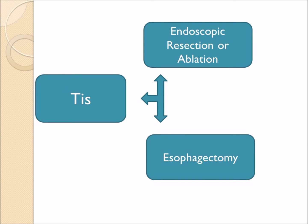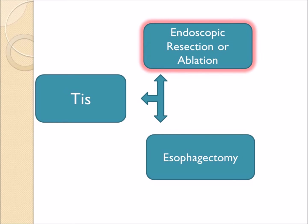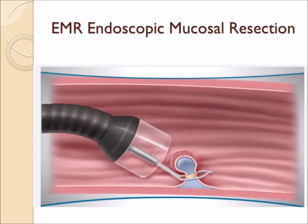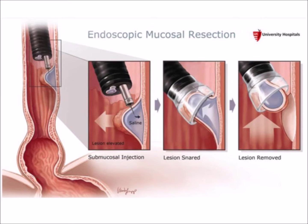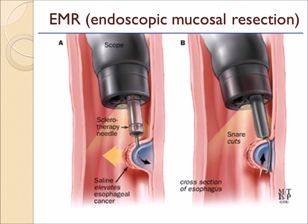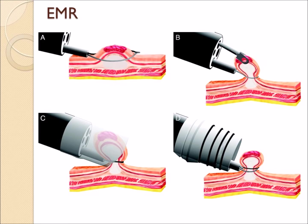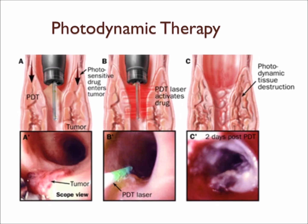If the patient has TIS, or in situ esophagus cancer, the best option is often endoscopic resection or ablation rather than esophagectomy and removing the entire esophagus. There are new endoscopic procedures that experts in gastroenterology can perform, commonly referred to as EMR or endoscopic mucosal resection. These techniques allow the gastroenterologist to remove superficial cancers. There is also photodynamic therapy and other ablative therapies that let the GI doctor burn out or ablate the cancer.